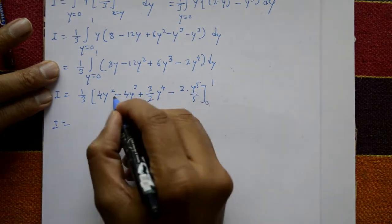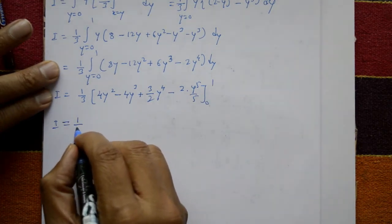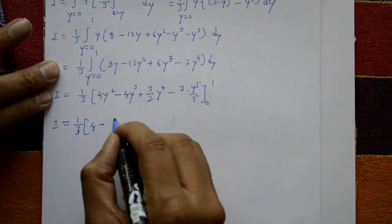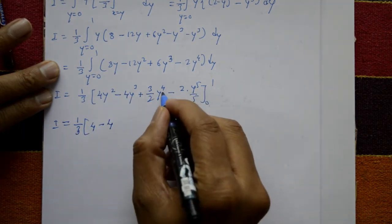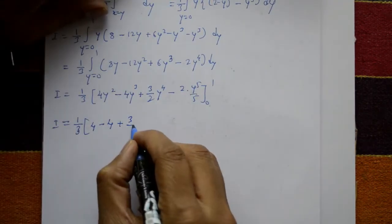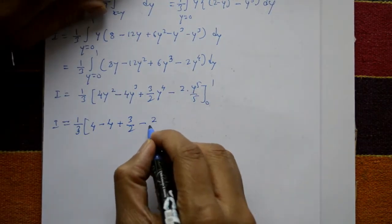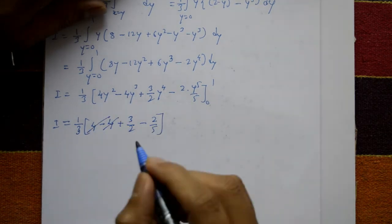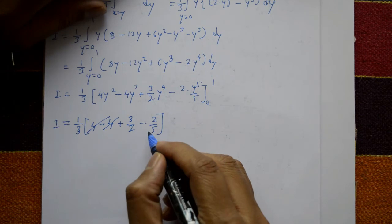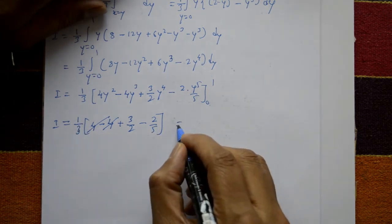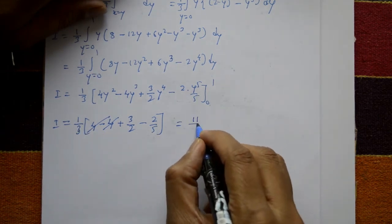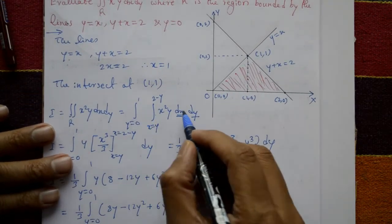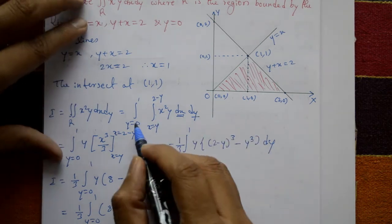Apply upper limit y equals 1: 1/3 times (4 minus 4 plus 3/2 minus 2/5). The terms 4 minus 4 cancel, leaving 3/2 minus 2/5 equals 11/10. So I equals (1/3)(11/10) equals 11/30.